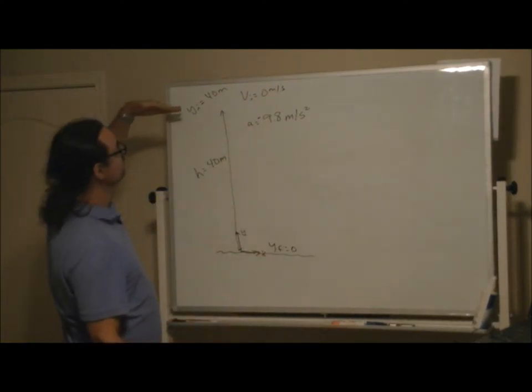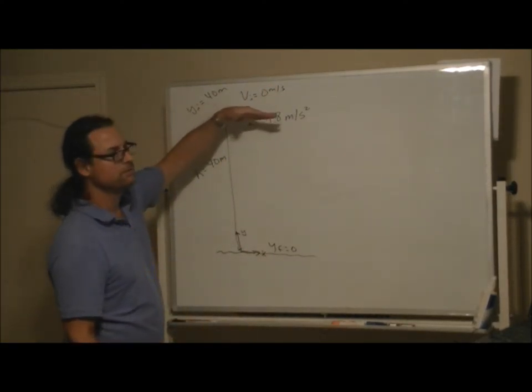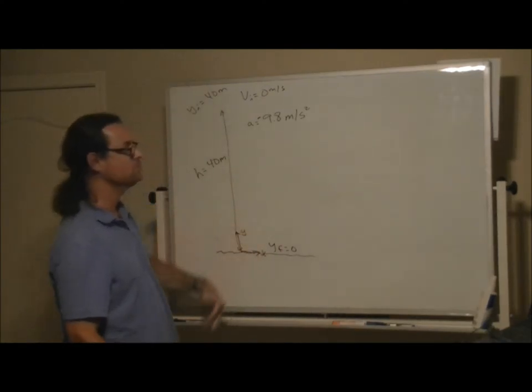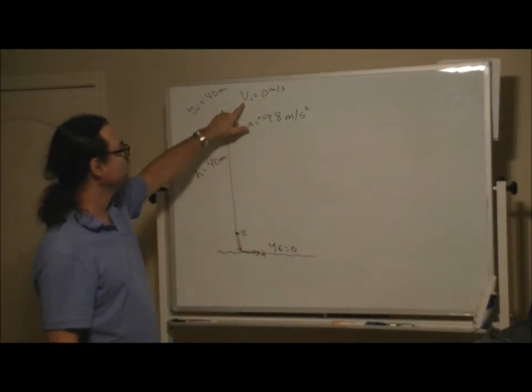that the pelican's kind of soaring along, maybe with a horizontal velocity, but with no vertical motion, sees the sardine, boom, goes and gets it. So the vertical component of initial velocity, let's make that zero.